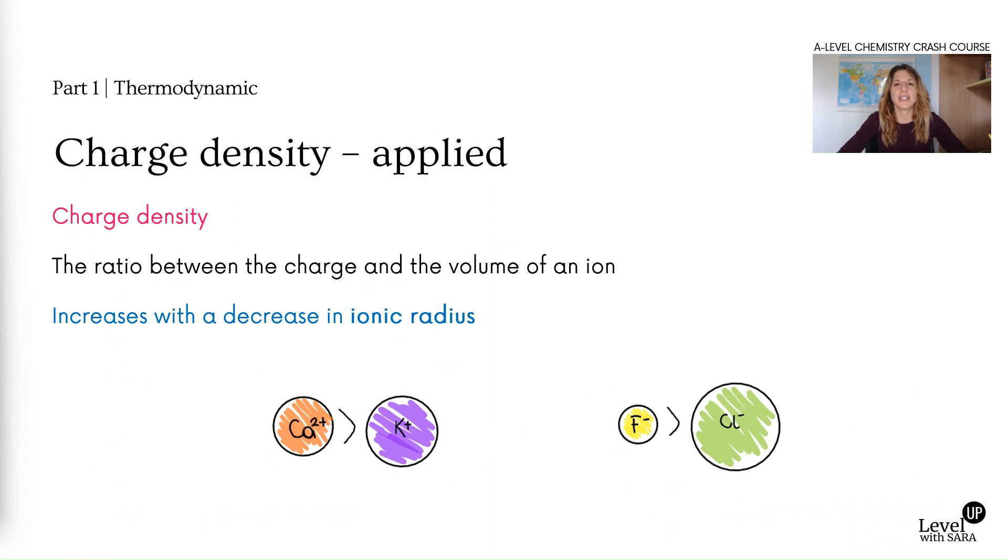It increases with a decrease in ionic radius. Let's think about it and then we will look at its applications and how to apply to exam questions. One more time, the definition: it's the ratio between the charge and the volume of an ion. It's density, we know density is mass over volume, in this case it's charge over volume.